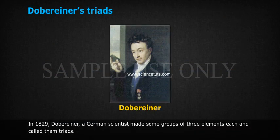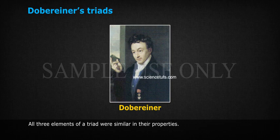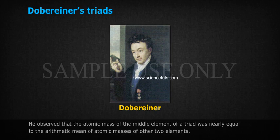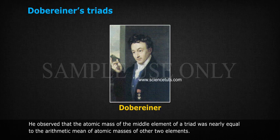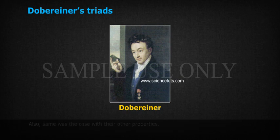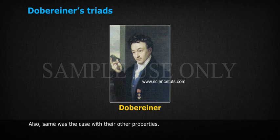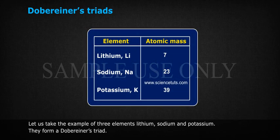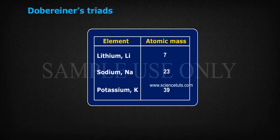In 1829, Dobreiner, a German scientist, made some groups of three elements each and called them triads. He observed that the atomic mass of the middle element of a triad was nearly equal to the arithmetic mean of atomic masses of the other two elements, and the same was the case with their other properties. For example, lithium (Li, 7), sodium (Na, 23), and potassium (K, 39) form Dobreiner's triad.